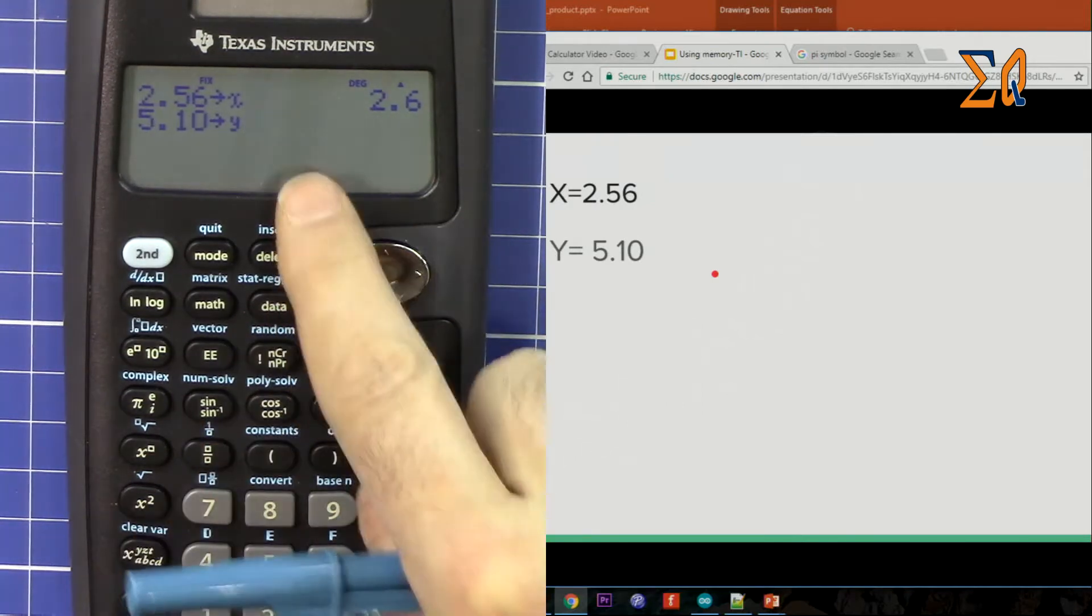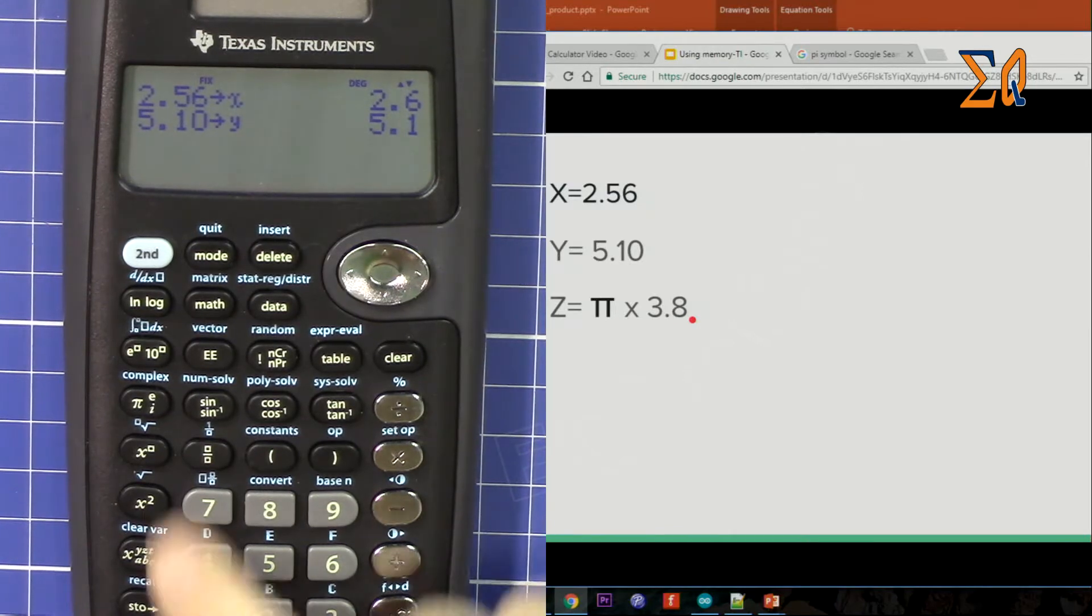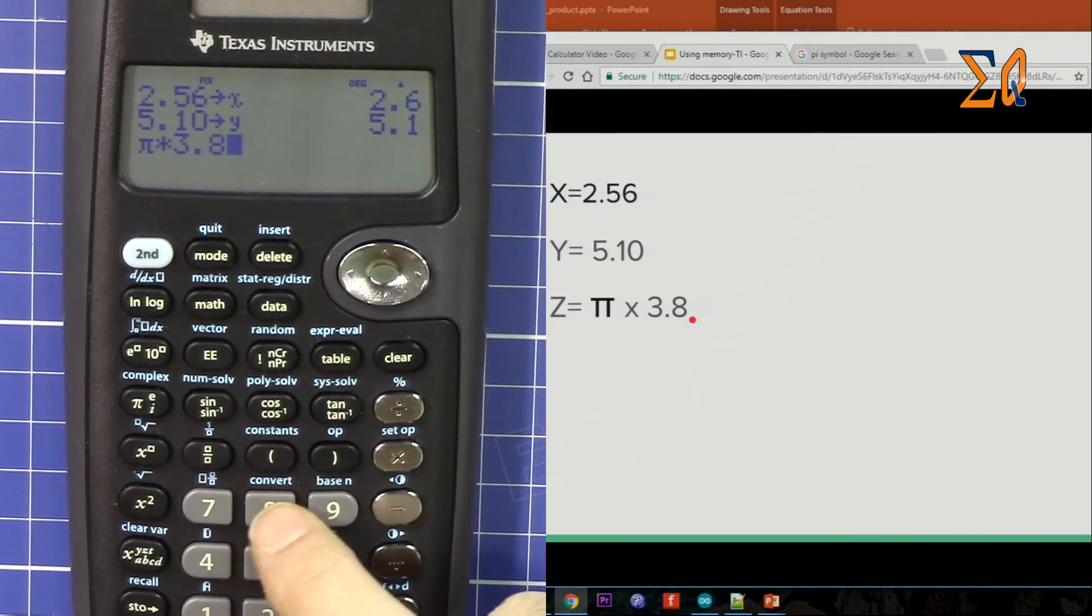Now let's do pi times 3.8. So we get pi times 3.8 and we want this one into memory.